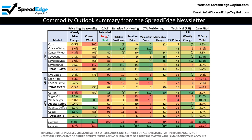Looking at the Outlook summary, there are five things that jump out at me. First is seasonality. Second is commitment of traders. Third is relative price and positioning. Fourth is CTA momentum. And finally, the relative strength index. I'll review each of these indicators in more detail on the following pages.